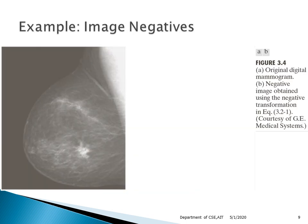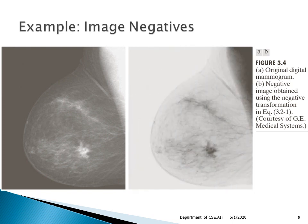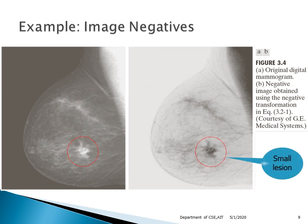As an example, consider an image that is predominantly black with a lesion — some unwanted growth. It is much easier to identify this wound when we convert the image to its negative. This example is taken from medical reports, where converting to a negative lets us easily identify the lesion. The negative transformation helps us identify parts of an image that are not very prominent in the original.